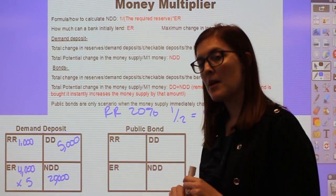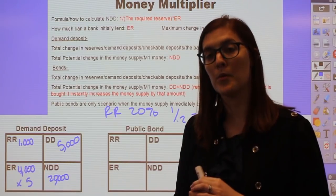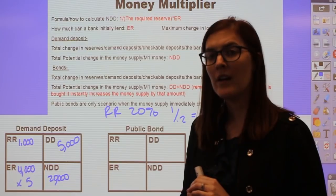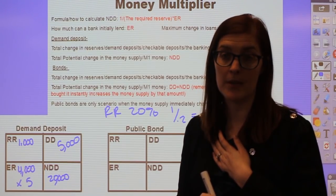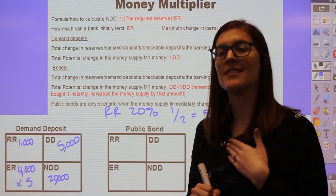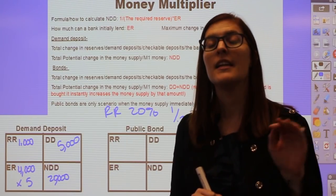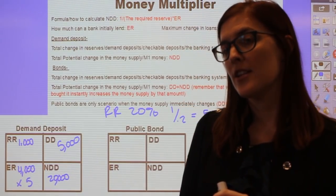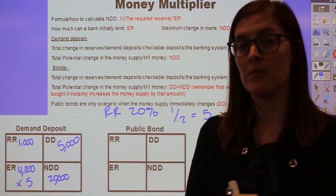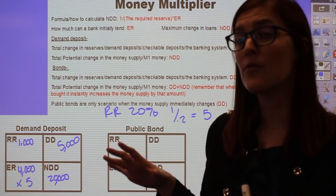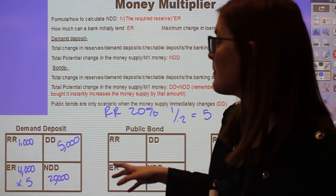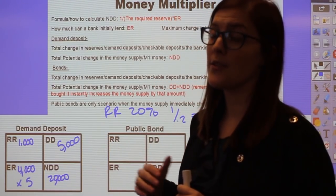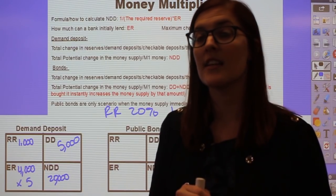AP questions on the demand deposit problem — the first important question is: did the money supply initially change? It was my money before; I didn't create money by putting it in the bank. All that happened is that now it's in the banking system. So no, in a demand deposit problem, the money supply does not initially change. The second question is: how much can this bank initially lend out? That's always just the excess reserves — $4,000 in this scenario.